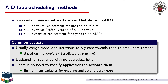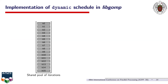Notably, all AID methods are designed assuming that the application runs with a number of threads that does not exceed the number of cores of the platform. There is no need to modify applications to use AID methods or to configure their parameters — all that can be done conveniently by using environment variables. The implementation of all AID methods reused part of the implementation of dynamic loop scheduling already found in libgomp.